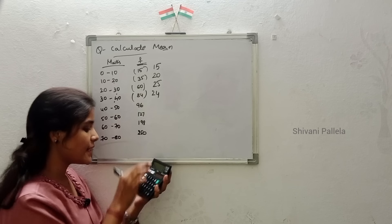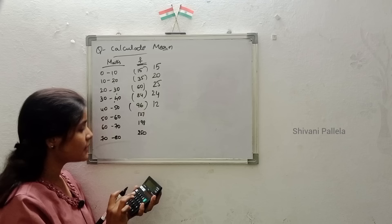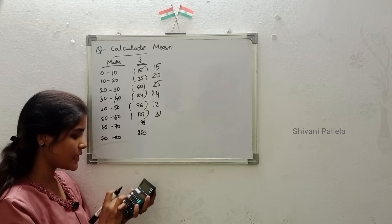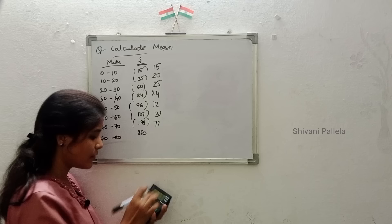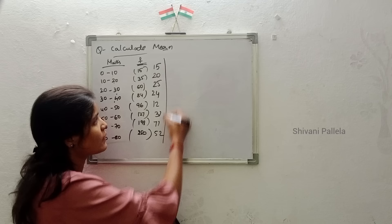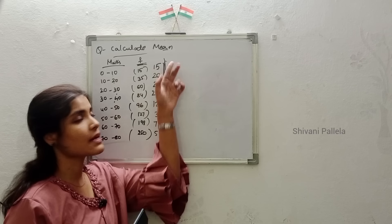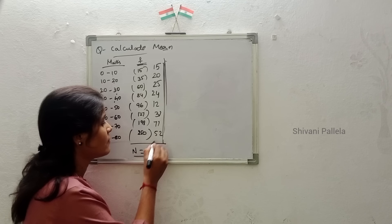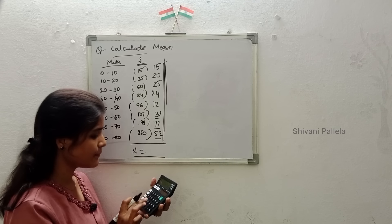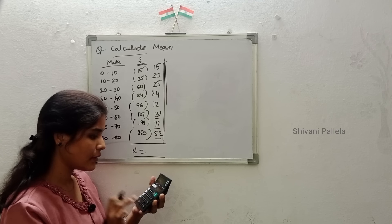Continuing the frequency calculation: 96 minus 84 is 12, 127 minus 96 is 31, 198 minus 127 is 71, 250 minus 198 is 52. These are the actual frequencies we have calculated. n means total number of frequencies: 52 plus 71 plus 31 plus 12 plus 24 plus 25 plus 20 plus 15 — n equals 250.